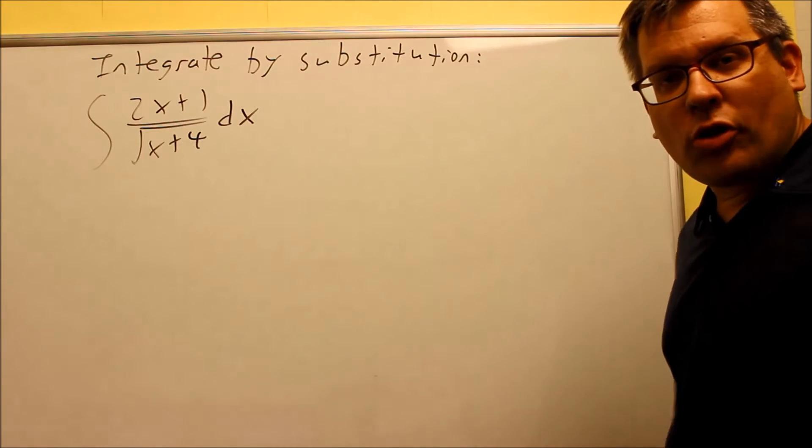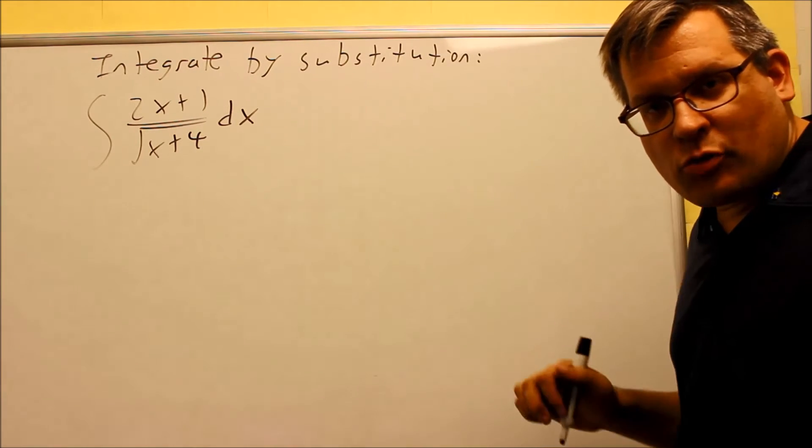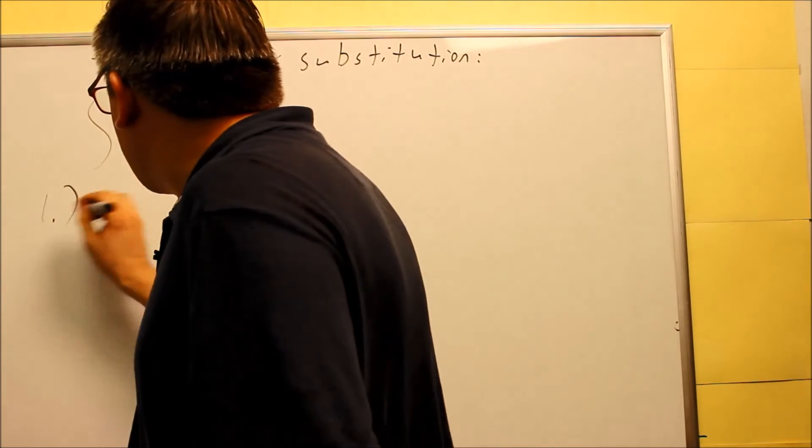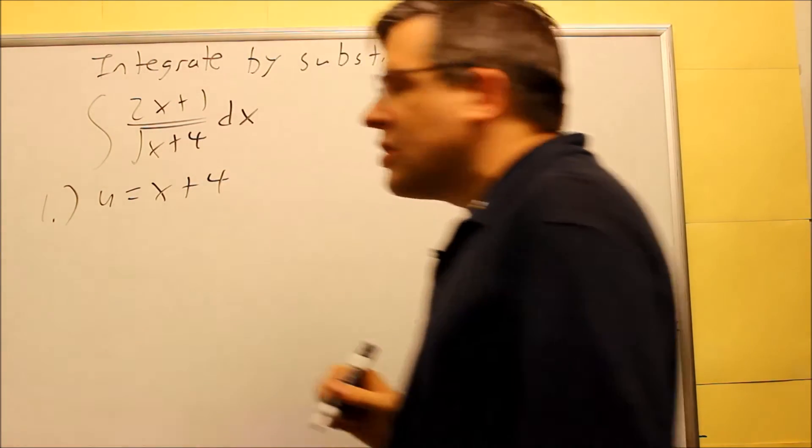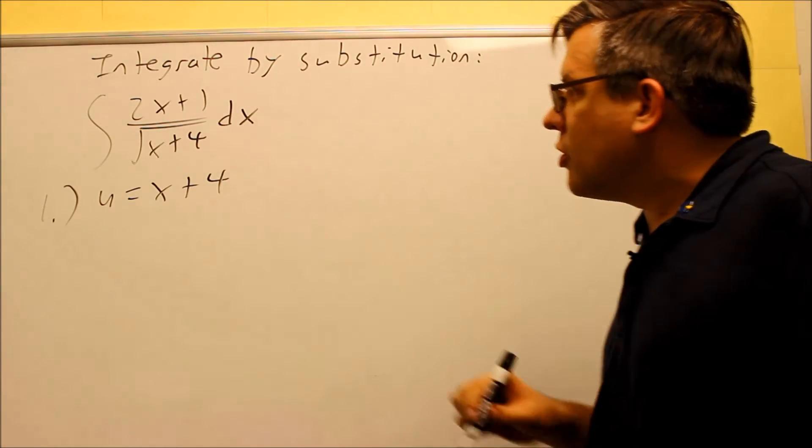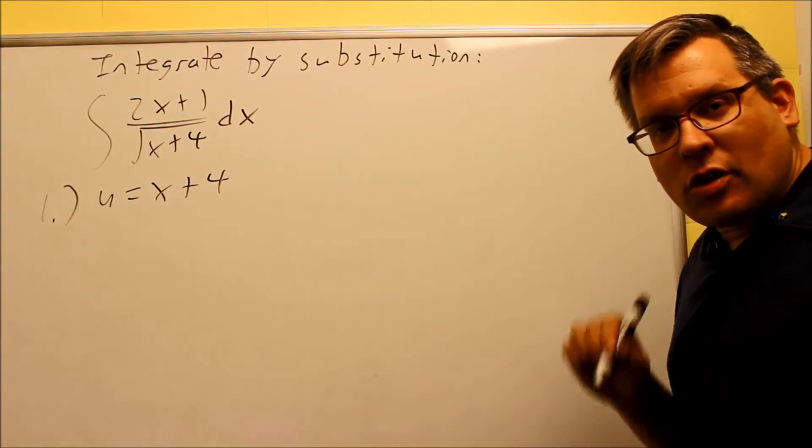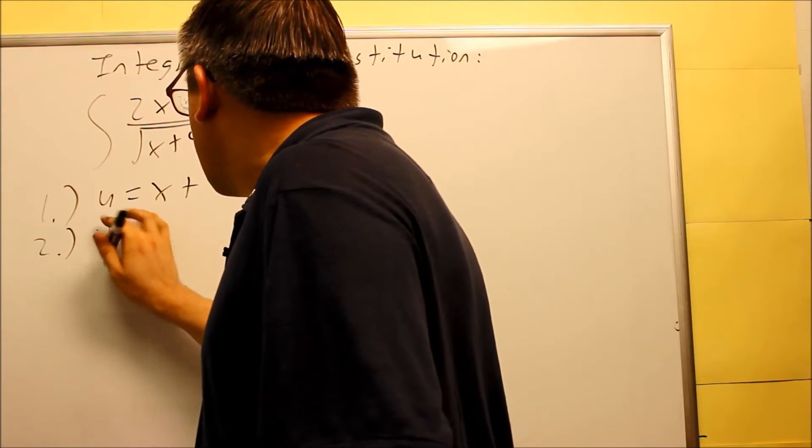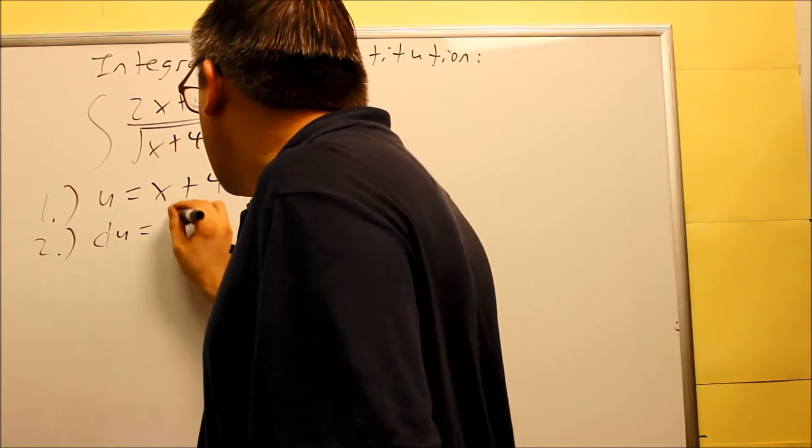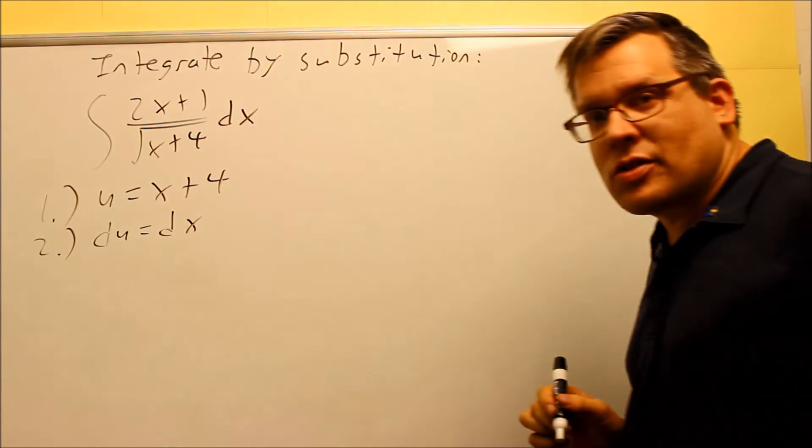We're going to do one more that involves the change of variables process we just talked about. So we're going to first identify your U. The U, we want to pick the one that's inside of something else. So we'll let the U equal X plus 4 inside the radical. Step number 2 is we take the derivative of both sides. So DU is, in this case, DU just equals DX, and that's going to be it.